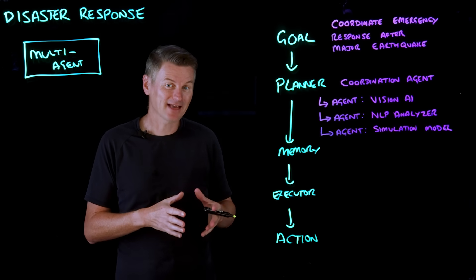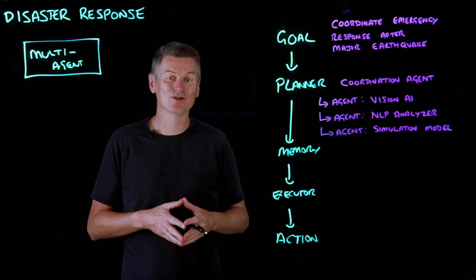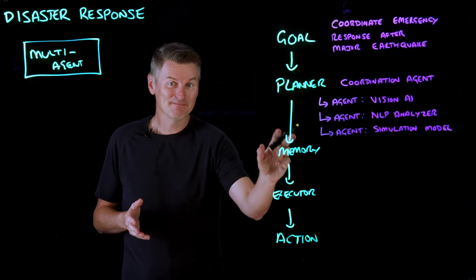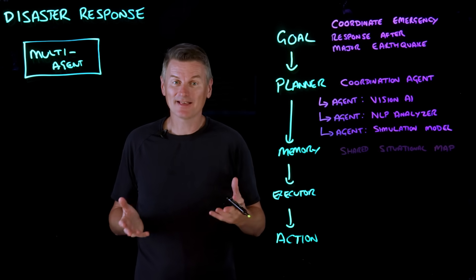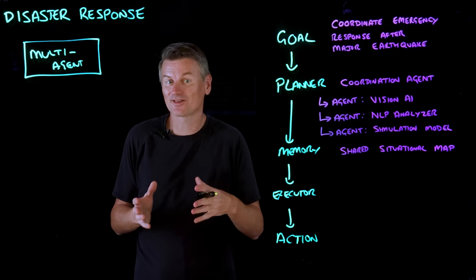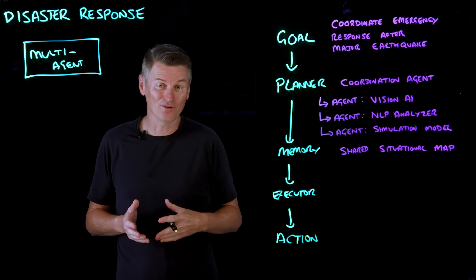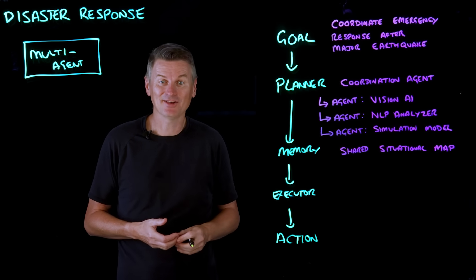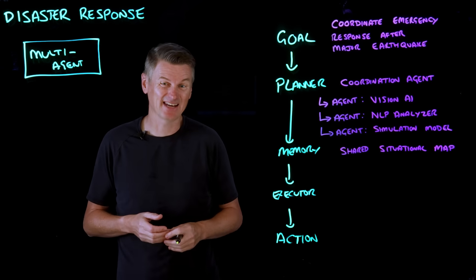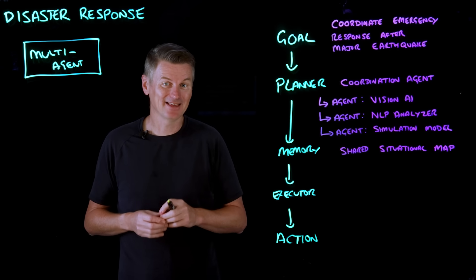Each specialist agent feeds intelligence back to the main planner. Now the memory component is a shared situational map that all agents can read from and write to. So when the social media agent detects help requests from a specific neighborhood, that gets flagged into memory.